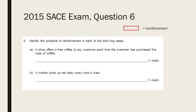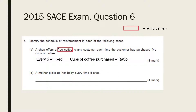This question is a little bit different to the first. Rather than simply describe a reinforcement schedule, you need to apply your knowledge to identify what schedule is being used in each case. For part A, it is a fixed partial schedule as the reinforcement of free coffee is being received every five times. It is a fixed ratio schedule as the reinforcement is being given after a certain number of operant responses — cups of coffee purchased.